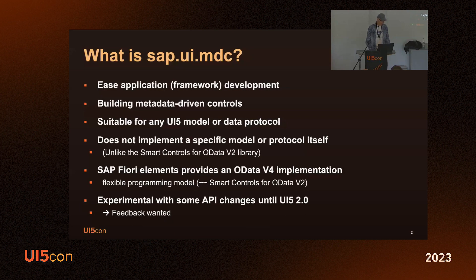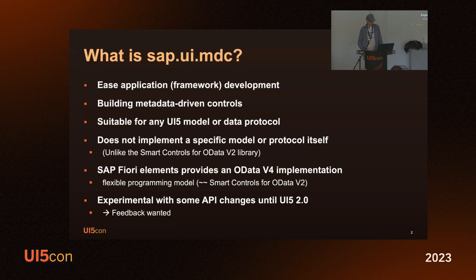But when you build a framework five years later, there are things you would want to change anyway. One thing we definitely knew for a long time was that it would be nice to combine the features of the smart controls more easily with different models or protocols, and also handle application-specific requirements that may not make it onto the backlog.